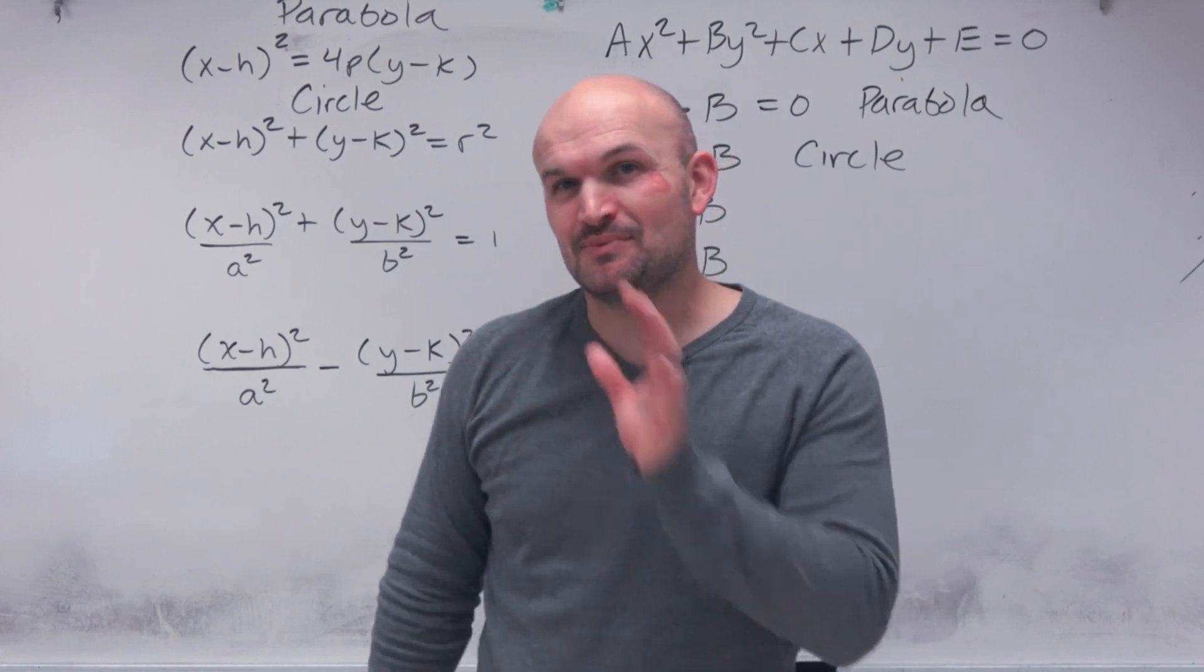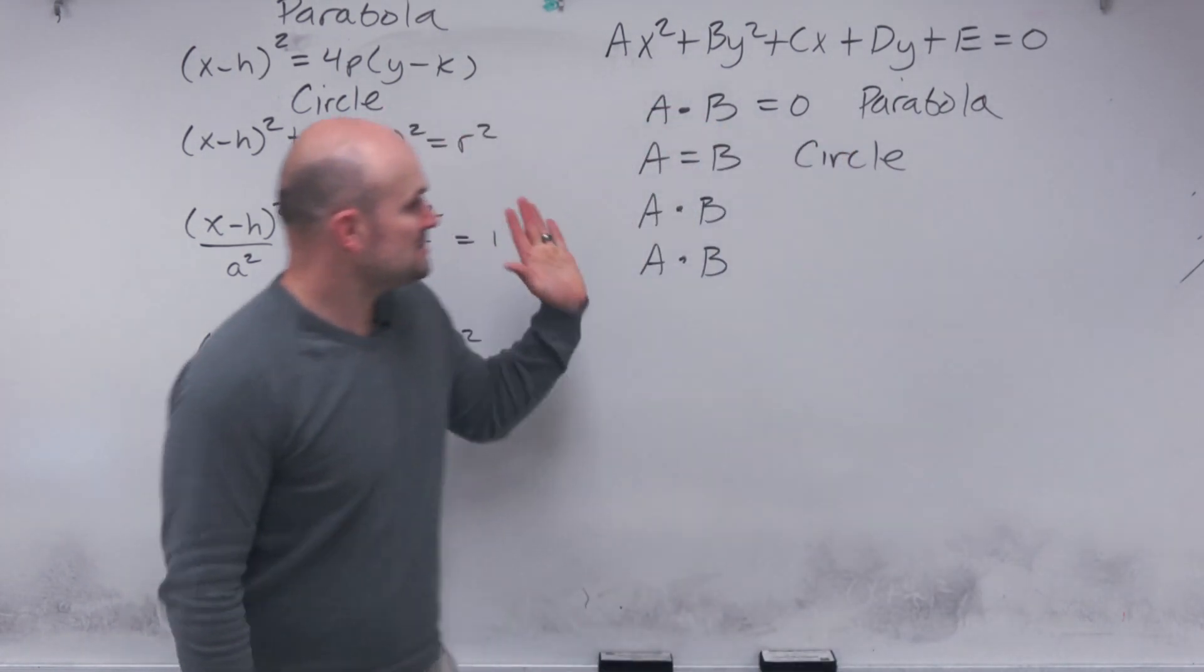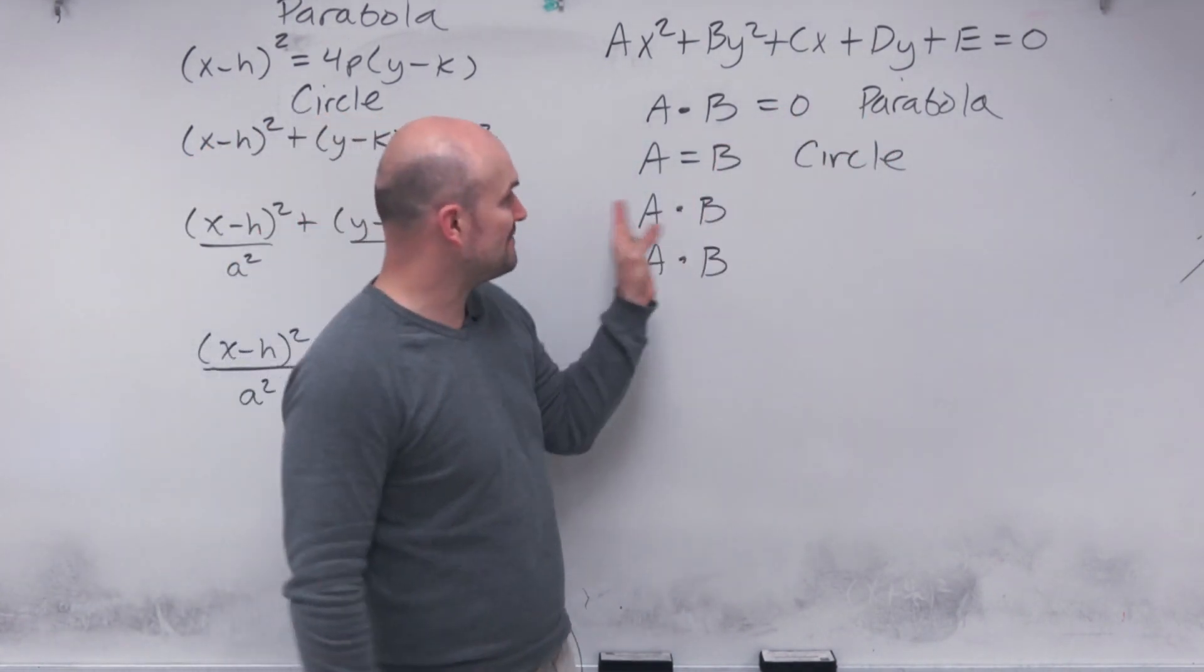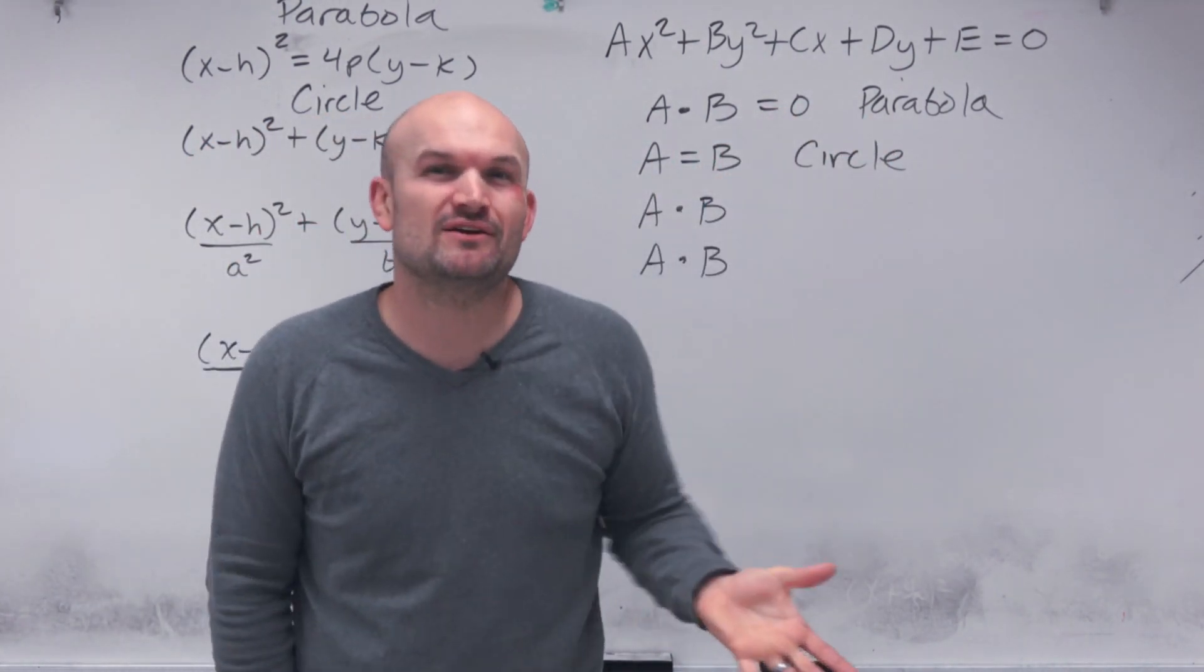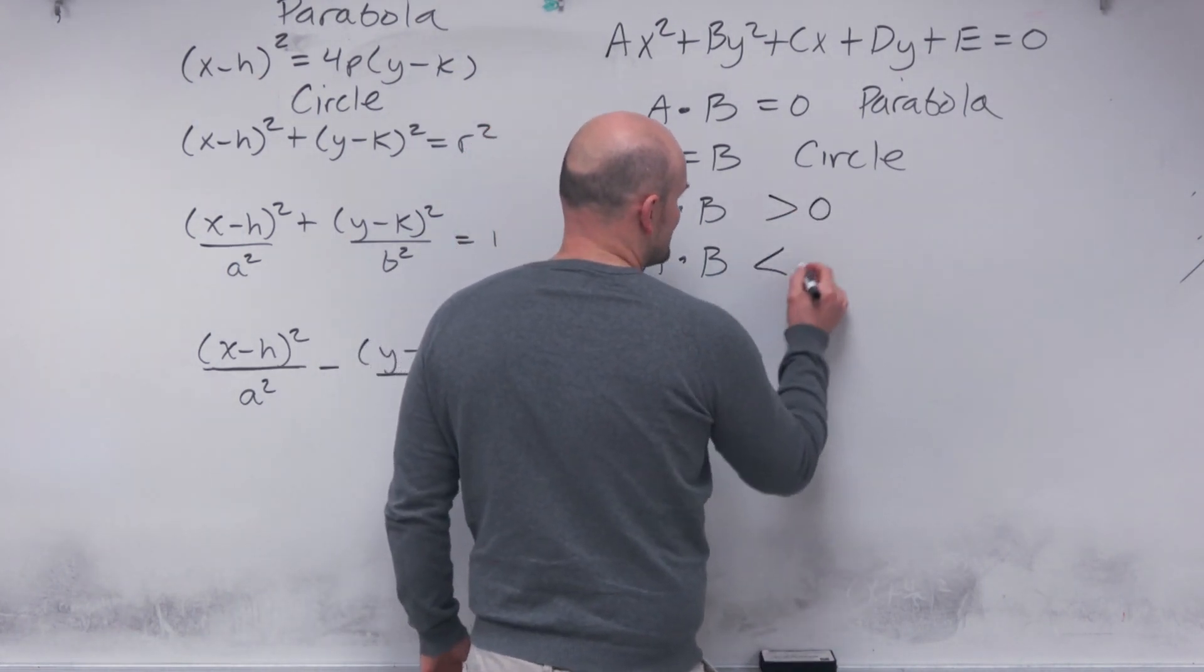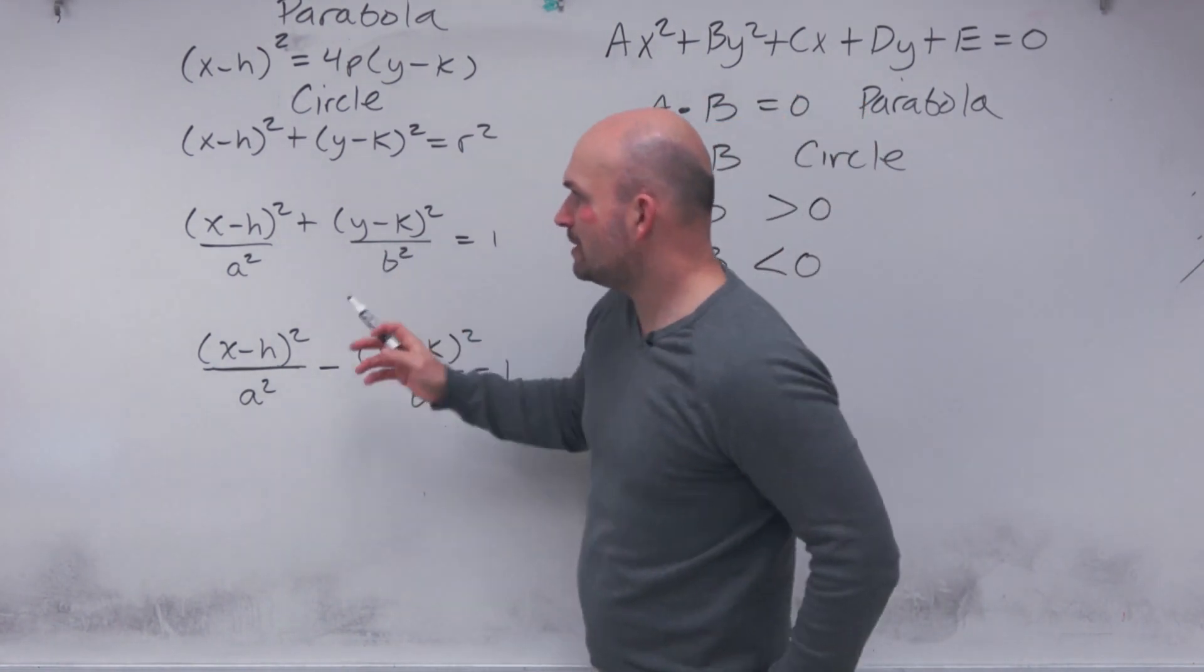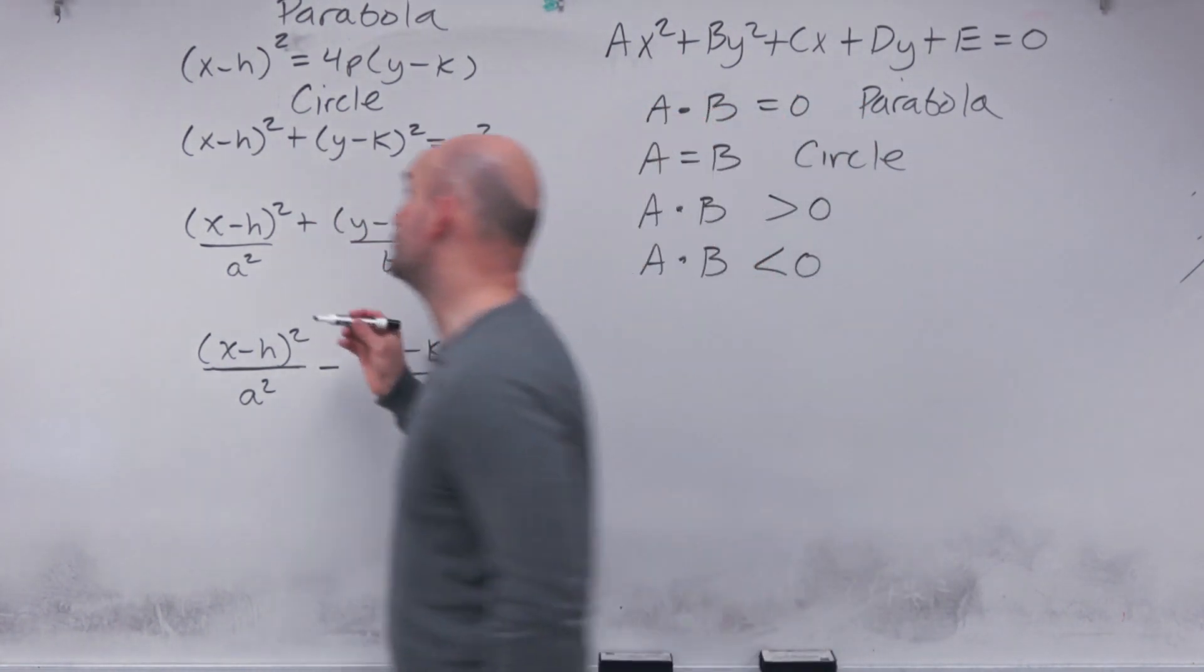Now, the next two is we're going to notice something that's just a little bit different. We're going to get a look at our products. So we have A times B is equal to zero. We have A is equal to B. Well, what else could we figure out with A times B? Well, I guess we could say, is it greater than zero or if it's less than zero? So if we go back to our standard form here and we recognize that an ellipse here, this is the equation for an ellipse.